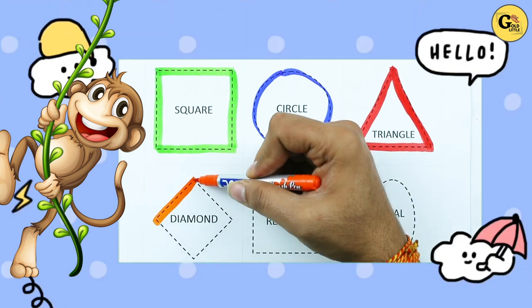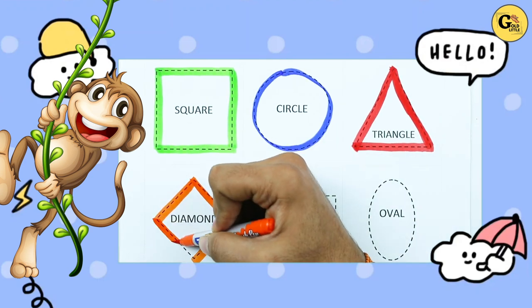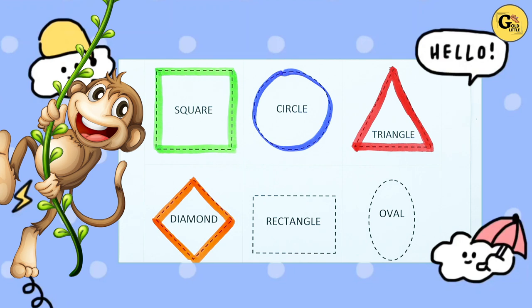One sliding line, two sliding line, three sliding line, four sliding line. It's a diamond, orange color, diamond.